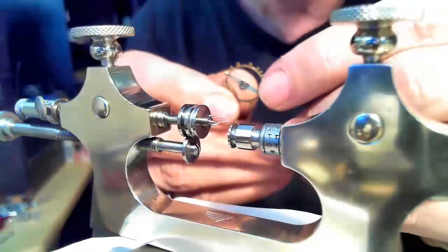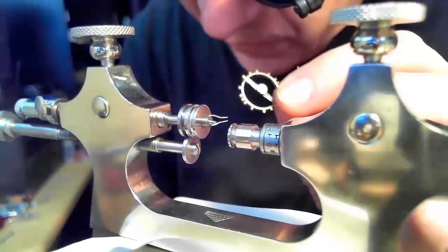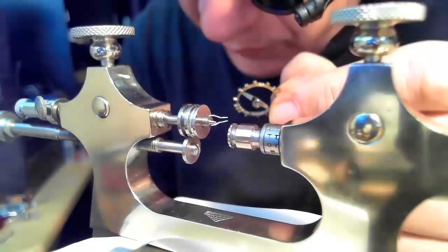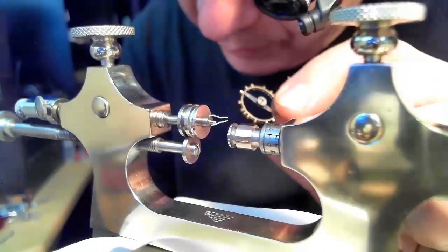And then just remove, I shouldn't be touching this with my hands, but just remove that from the burnishing tool. Have a look at the end of the pivots. And they're smooth as a baby's bum.